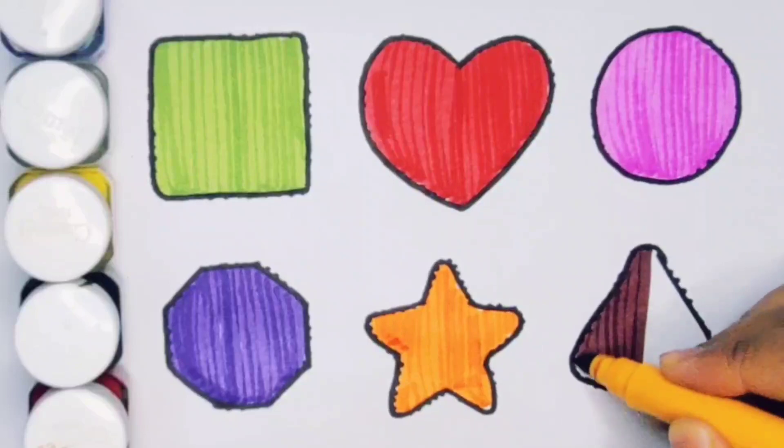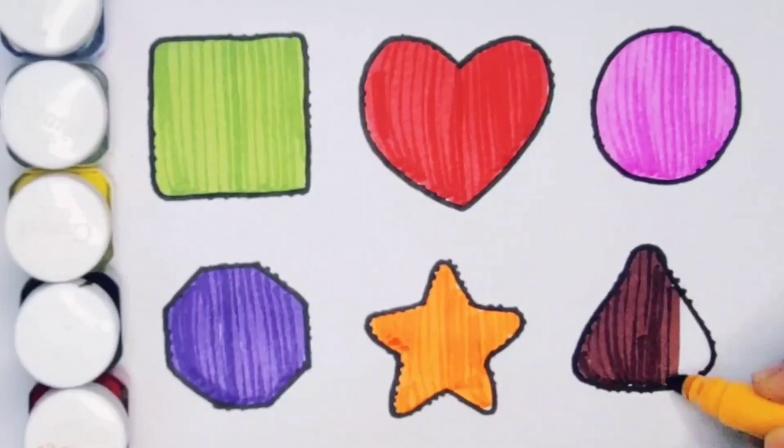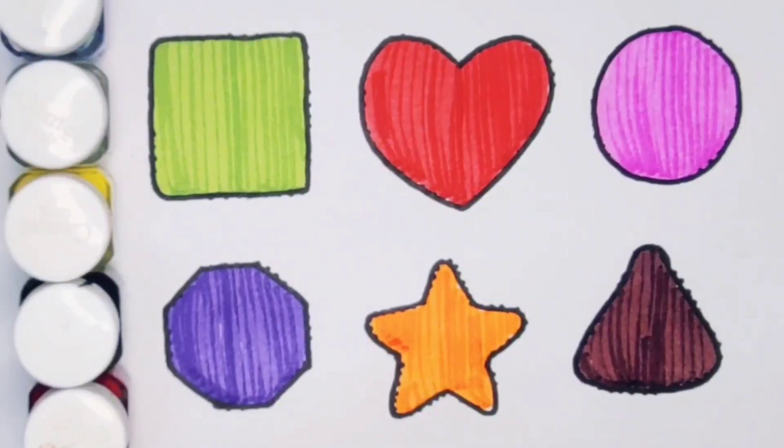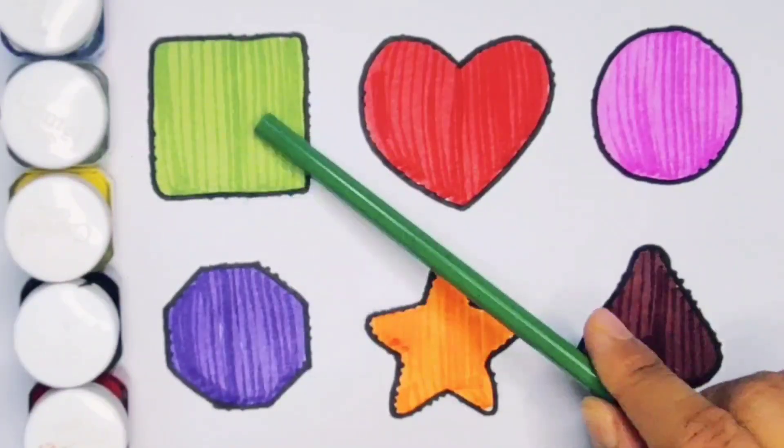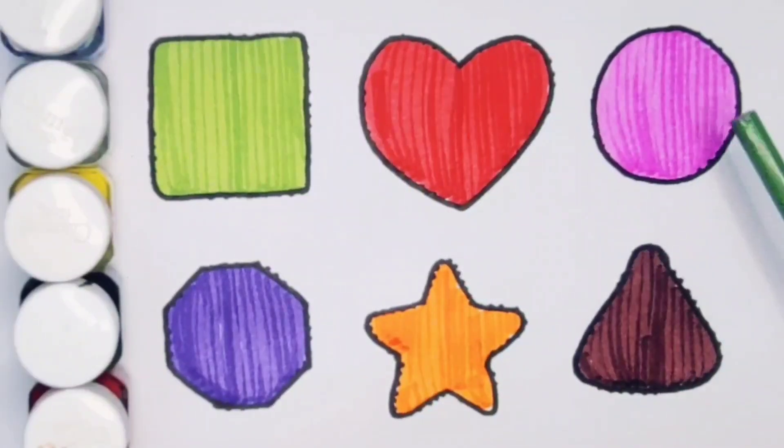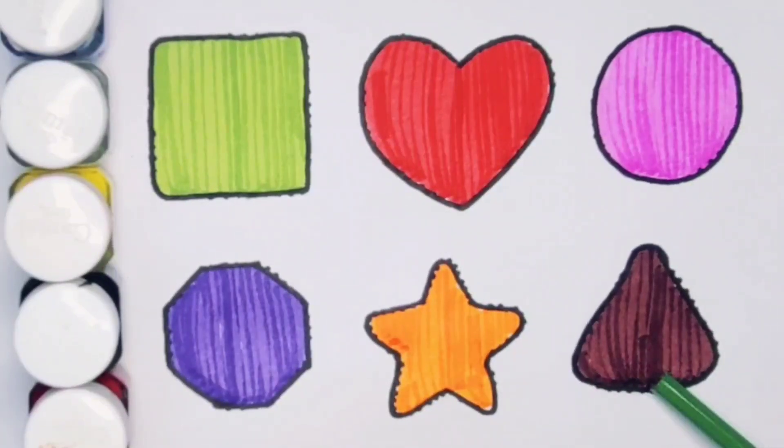What you learn, we learn: green color square, red color heart, pink color circle, purple color decagon, orange color star, chocolate color triangle.